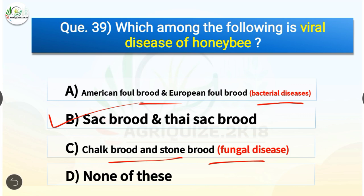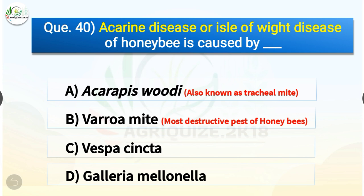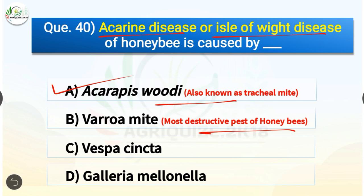Question number forty: Acarine disease or Isle of Wight disease of honeybee is caused by — options are Acarapis woodi, Varroa mite, Vespa singhara, or Galleria mellonella. The correct answer is option A, Acarapis woodi. Acarine disease is caused by Acarapis woodi, also known as the tracheal mite, and Varroa mite is the most destructive pest of honey bees.